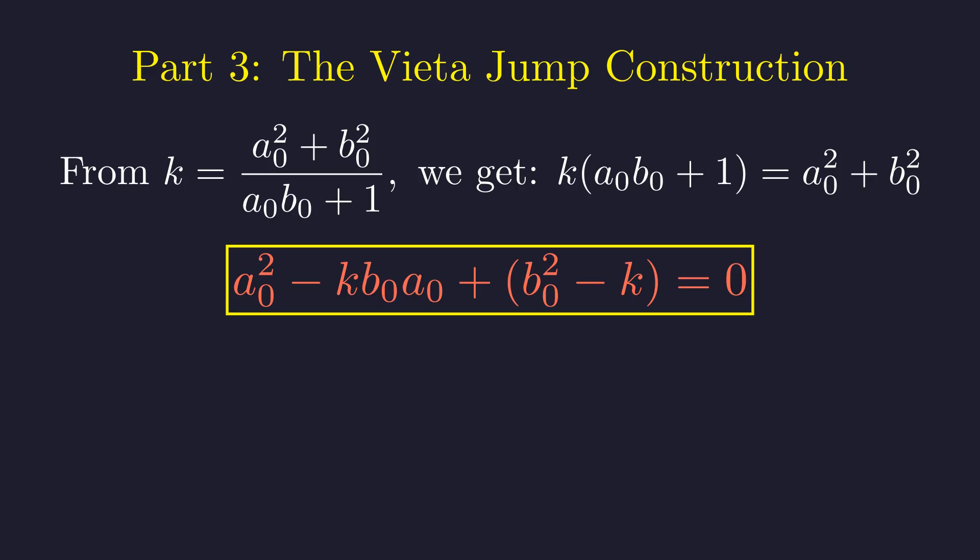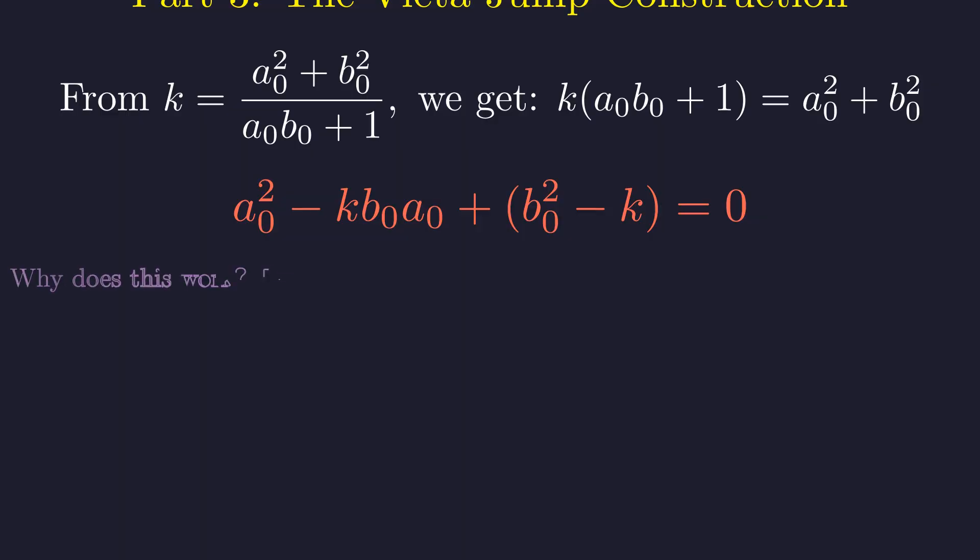By Vieta's formulas, we can find the other integer root. The key insight is that we're treating a0 as the unknown variable, while b0 and k are fixed constants. This perspective transforms our Diophantine equation into a standard quadratic equation.